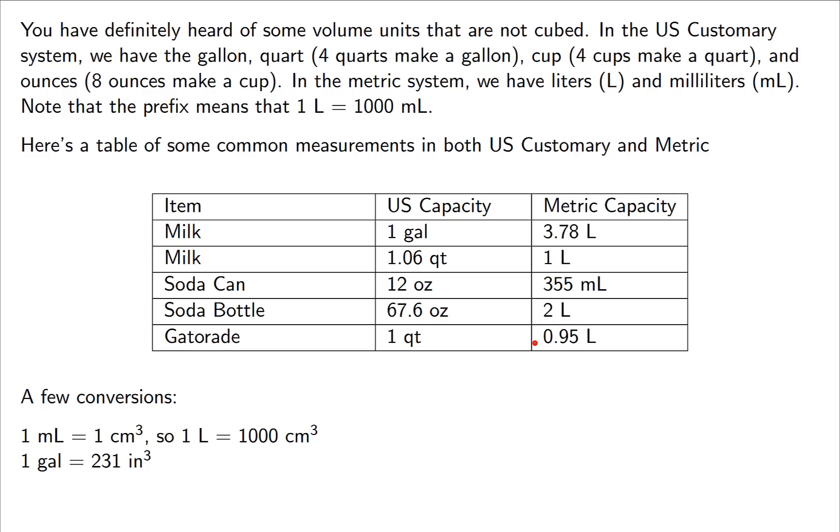So now let's talk about the conversions. One milliliter is defined to be one cubic centimeter. That makes it pretty easy. And with that said, it's fairly simple math to say one liter would then be a thousand centimeters cubed. This particular conversion is a good one to have nearby. Also, one gallon is actually defined to be 231 inches cubed. Let's use these conversions and see what we can do with them.